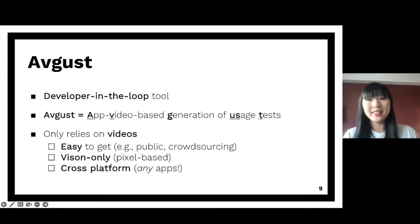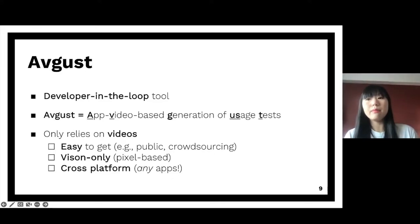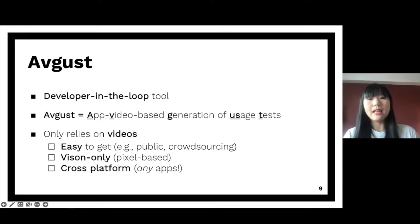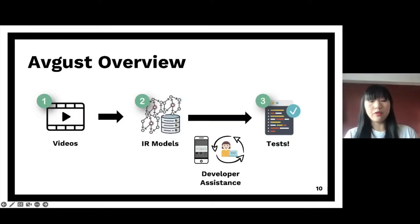To address that limitation, here comes our new work August. It's a developer-in-the-loop tool to generate usage-based tests by relying on app videos only. Videos are much easier to get, and you can obtain them by crowdsourcing without requiring testing expertise. Also, by relying on videos only, August's underlying technique is pixel-based and cross-platform, since we can always record a video from any app. This is the overview of August: it extracts IR models from app videos, then uses the models to guide test generation with the developer's assistance. The process repeats for each usage.